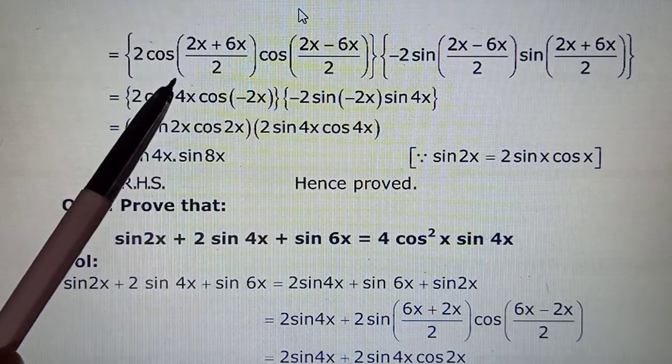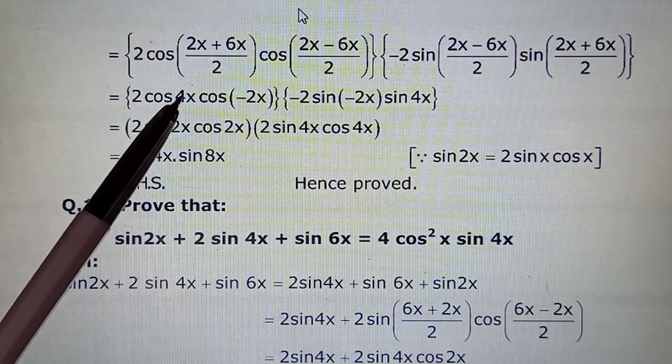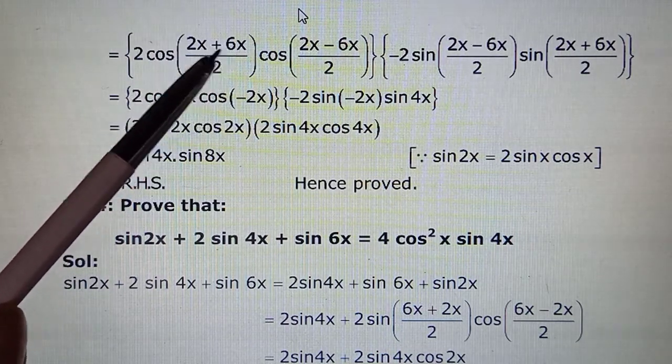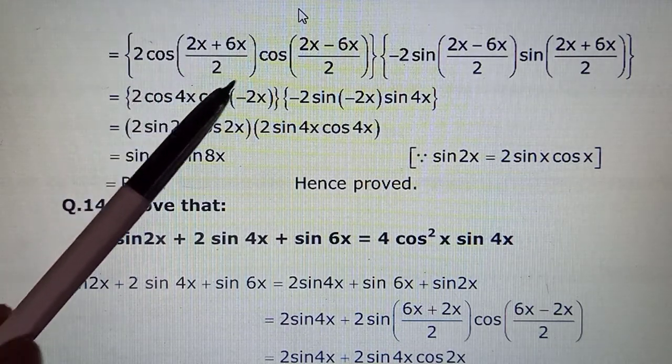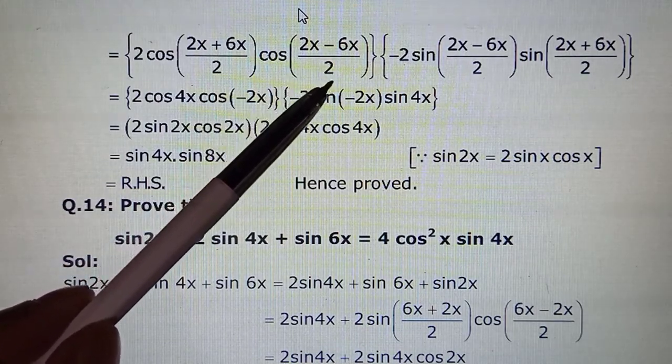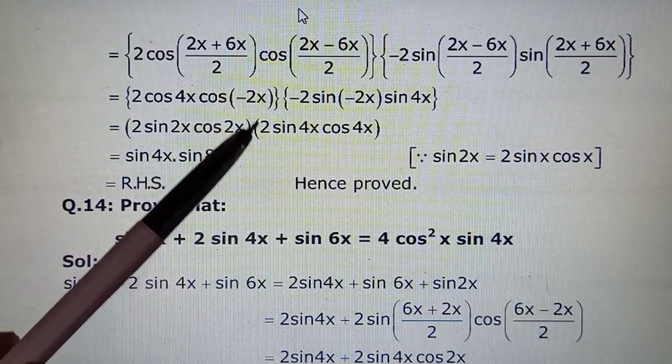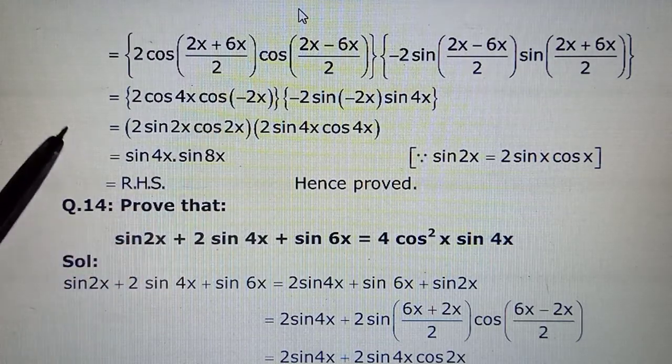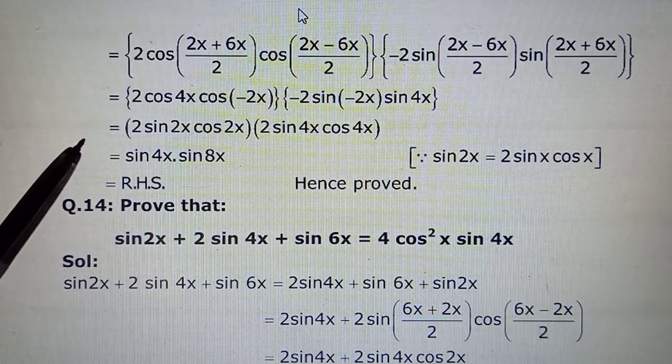Just have to take care of the formulas, apply them properly and that is it. Questions are very easy. So this becomes 8/2 = 4x. And this is -4/2, so that is -2x, which is actually 2x only. Cos(-θ), fourth quadrant mein aata hai wapis.